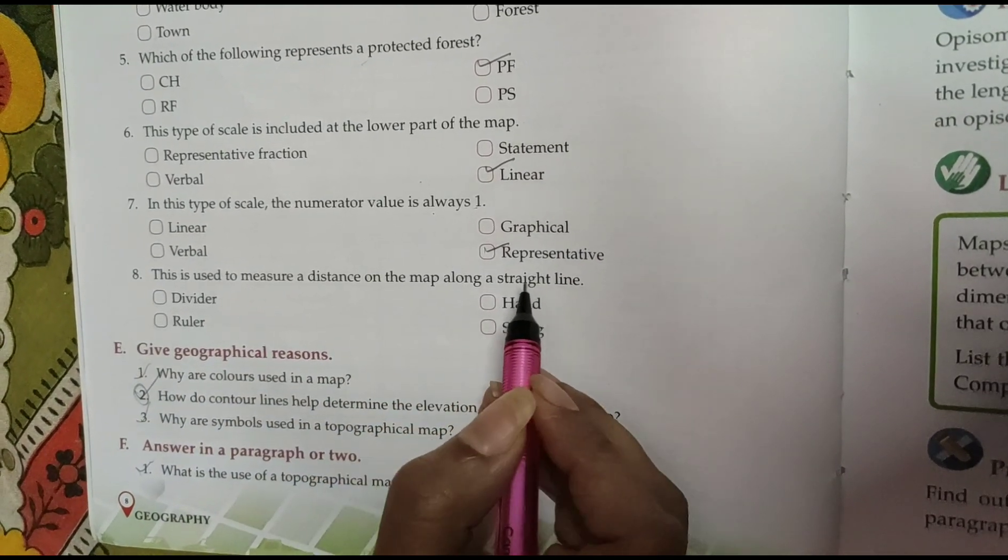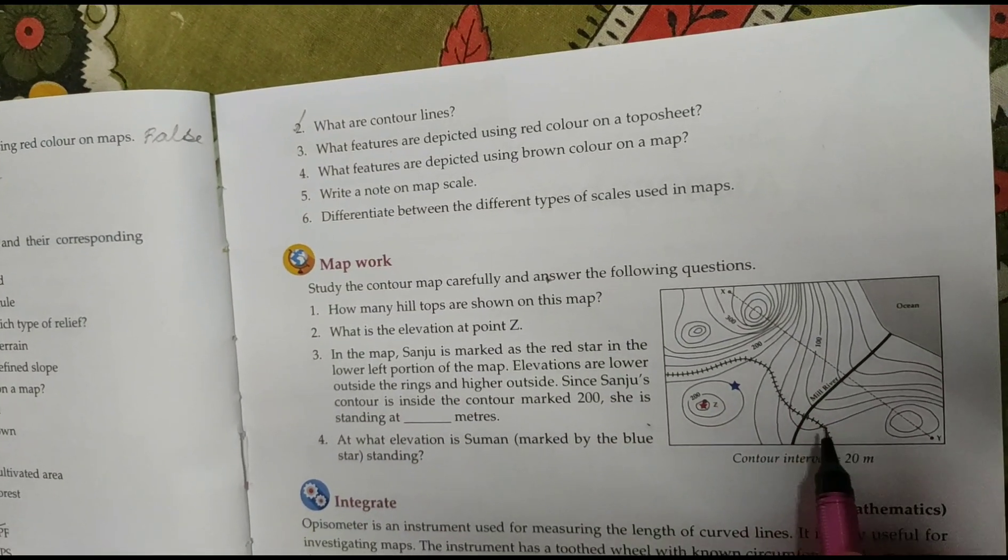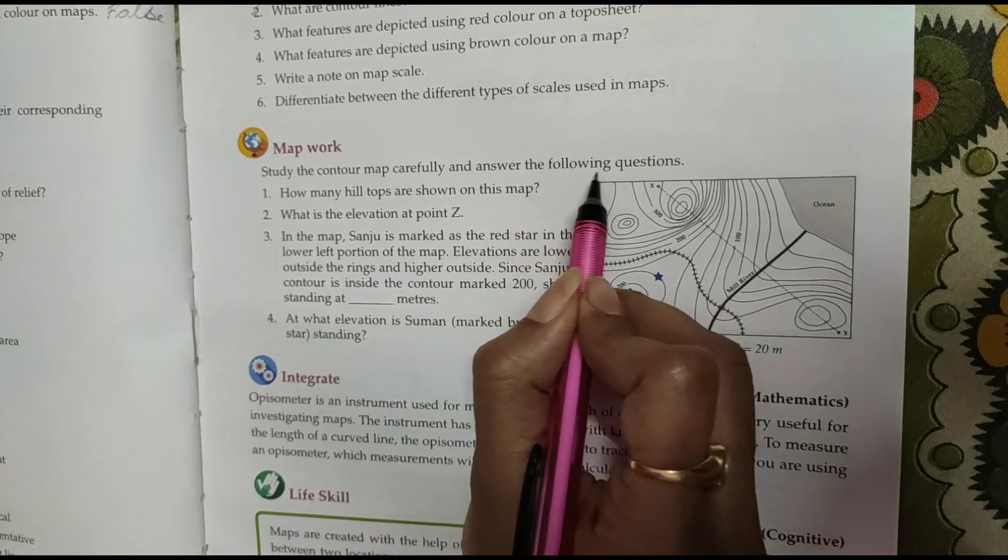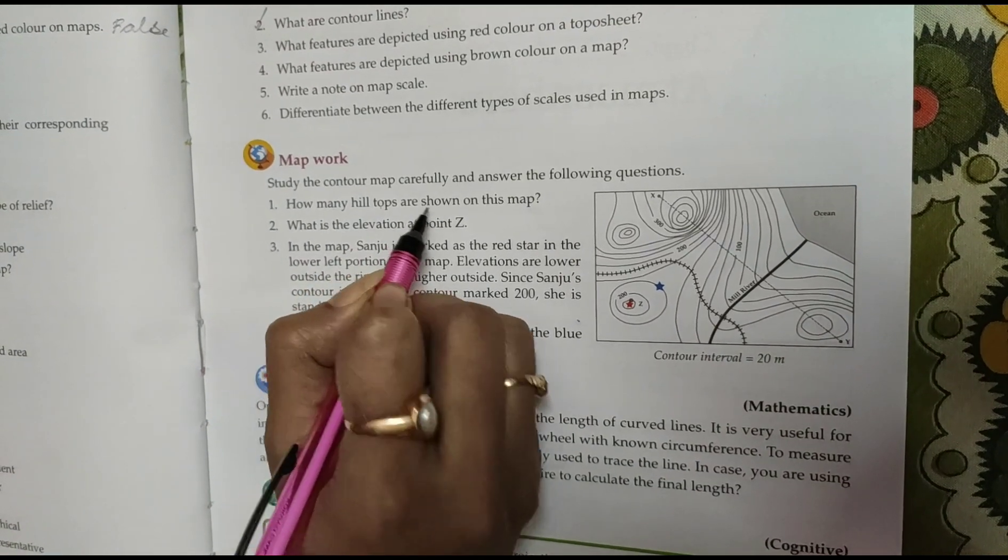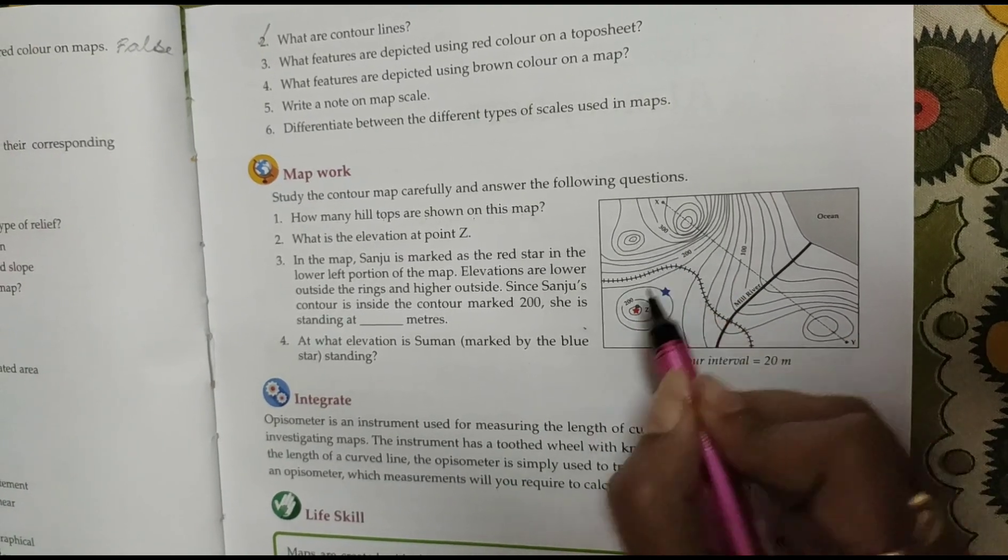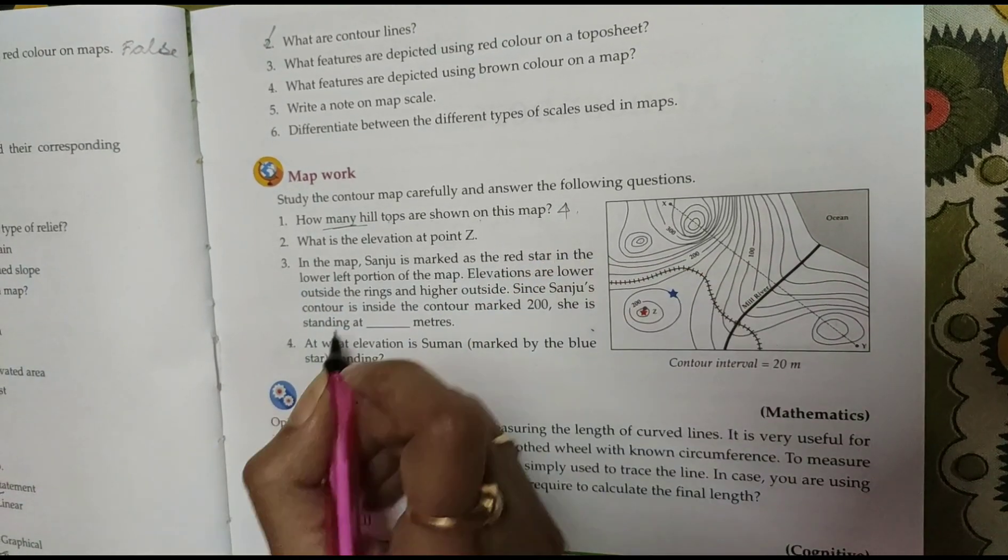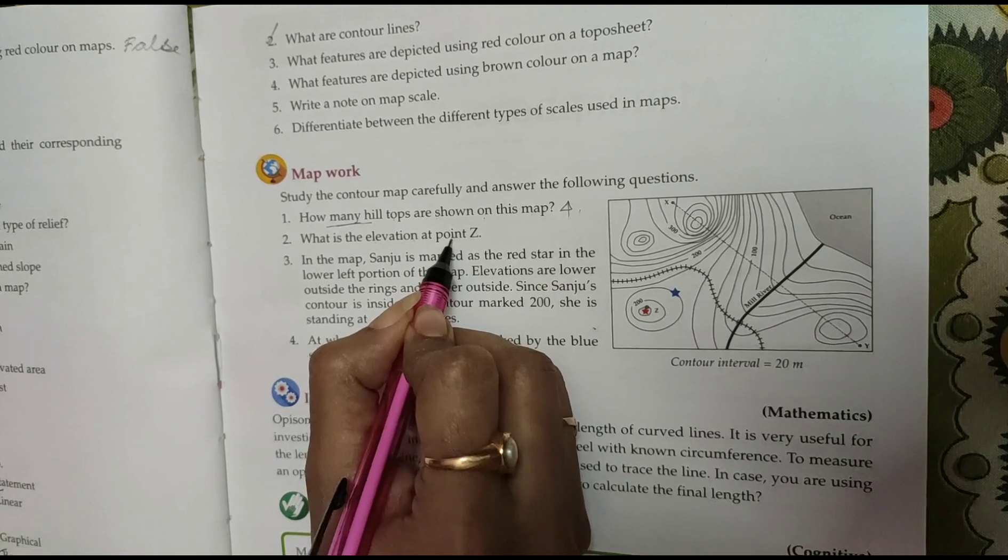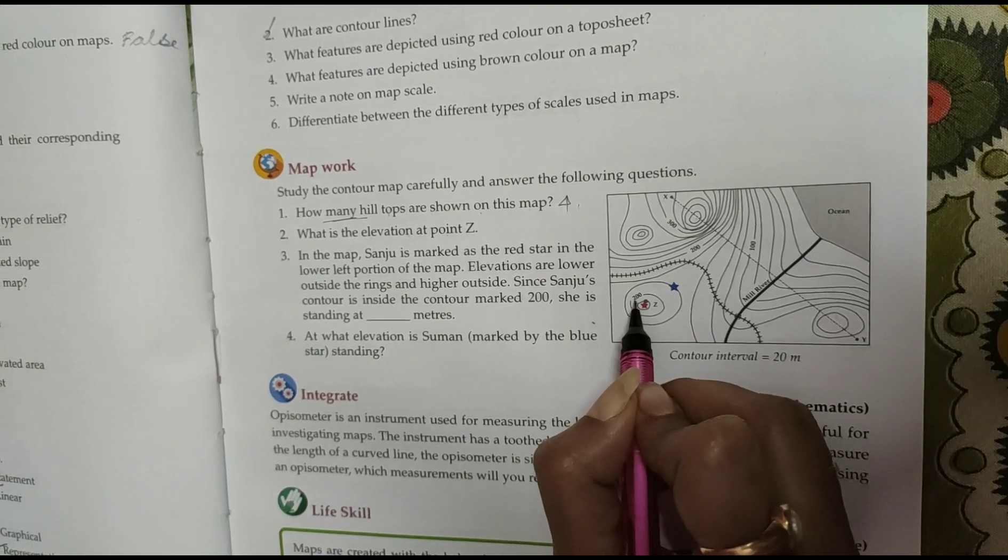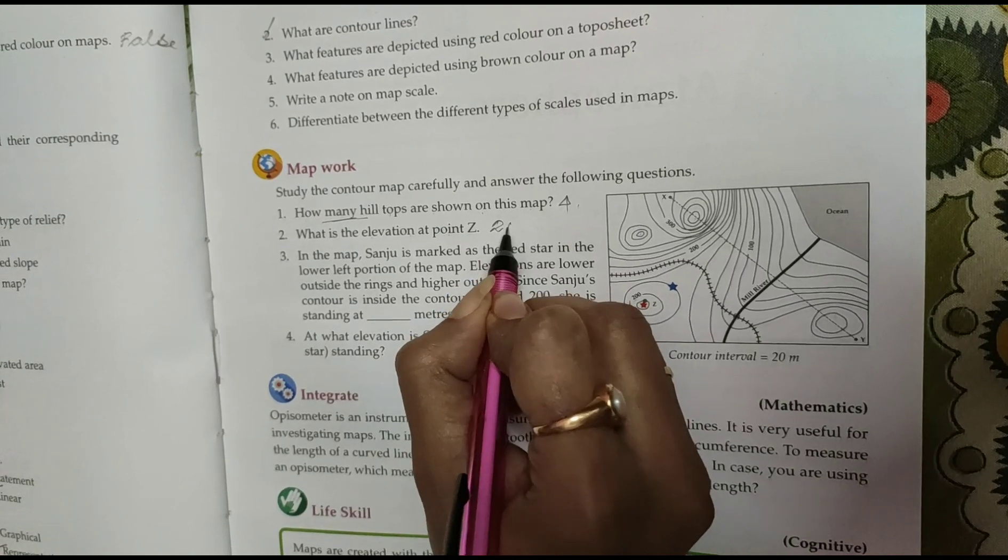Now next, here it is showing a picture. Study the contour map carefully and answer the following questions. How many hilltops are shown on the map? These are hilltops, one, two, three, four. So four hilltops are here. What is the elevation at point Z? That is 200 meters, it is written on that contour at Z point, elevation 200 meters.